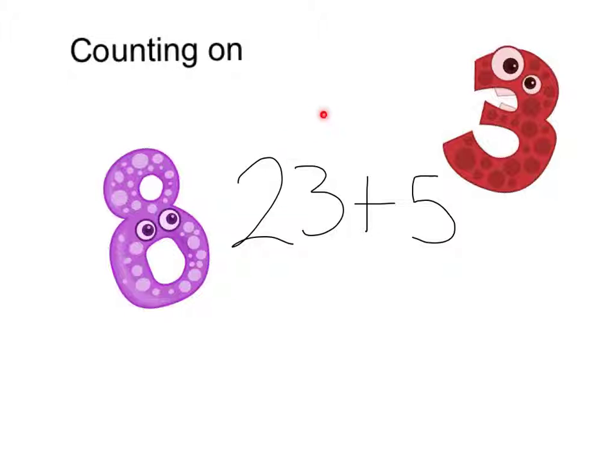So 23, count on 5: 23, 24, 25, 26, 27, 28. The other way you could do it is ignore the 2 for a minute and just do 3 plus 5 is 8, put the 20 back on, gives me the 28.